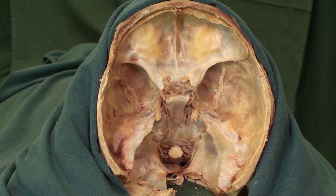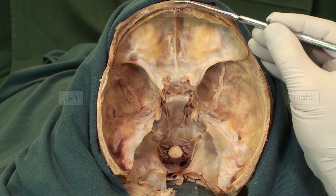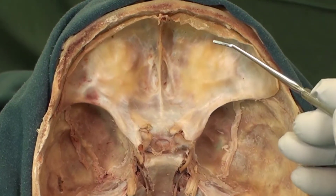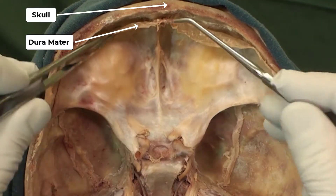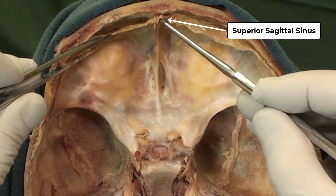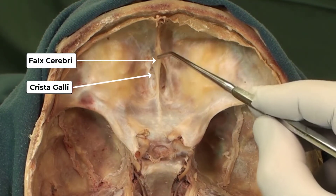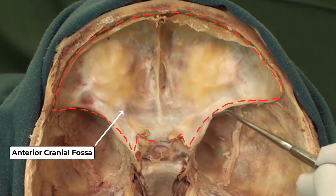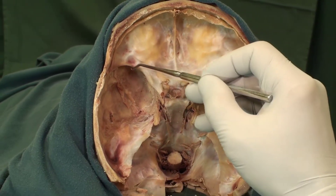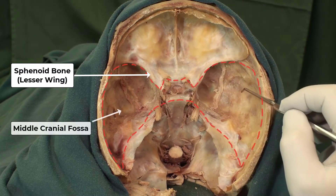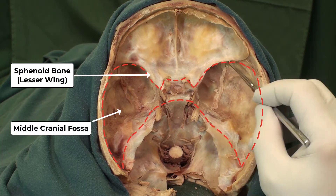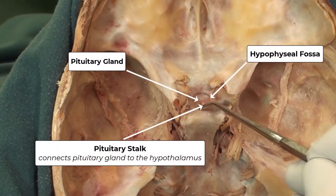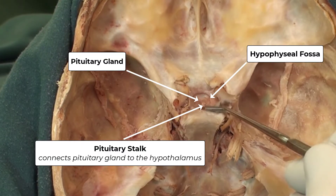Now we want to walk you through the base of the skull. That is the anterior side, here is the posterior side, the right, and the left. Starting from the anterior side, you can see the dura mater being detached from the skull. We can see the superior sagittal sinus between two layers of the dura, and the attachment of the falx cerebri to the crista galli. Moving backward, here is the anterior cranial fossa; its posterior border is the lesser wing of the sphenoid bone. In the middle we have the middle cranial fossa, between the lesser wing of the sphenoid bone and the petrous part of the temporal bone. And in the midline we have the pituitary gland sitting in the hypophysial fossa, and that is the stalk of the pituitary gland.